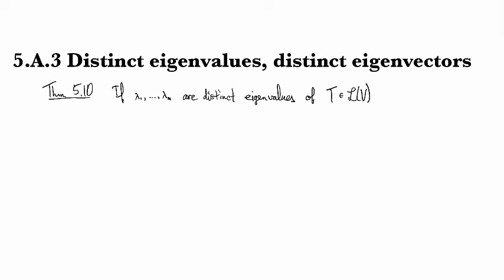So if we've got m distinct eigenvalues of the operator T, then the corresponding eigenvectors are linearly independent.